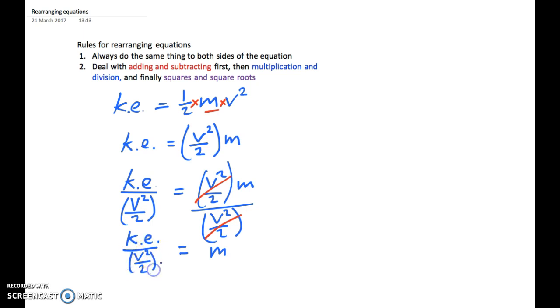Now we can actually bring this—because we're dividing and dividing, we can actually move this to the top here to multiply the kinetic energy. So we end up actually simplifying it: 2KE over v squared equals M.